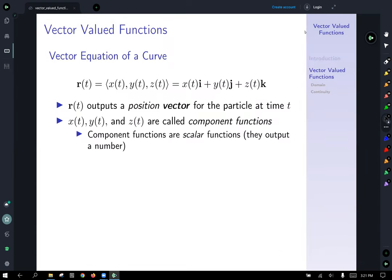A vector equation of a curve can be given by, if you know the parametric equations for the individual coordinates, then the position vector will be just the result of each of those parametric equations, x of t, y of t, and z of t, in the x, y, and z component of your position vector.